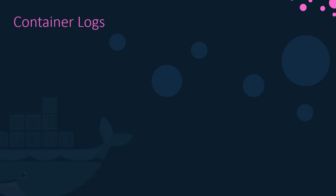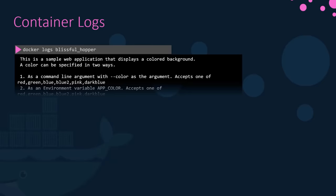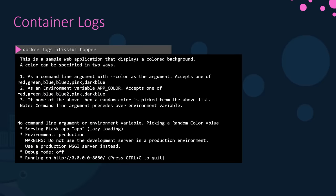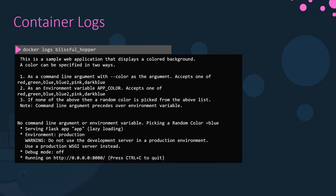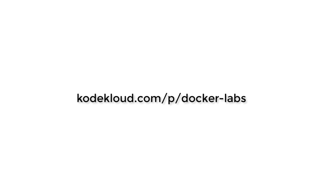The Docker ps command is good enough to get basic details about containers like their names and IDs. But if you would like to see additional details about a specific container, use the Docker inspect command and provide the container name or ID. It returns all details of a container in a JSON format, such as the state, mounts, configuration data, network settings, etc. To see logs of a container running in the background, use the Docker logs command and specify the container ID or name. Head over to the challenges and practice working with Docker commands.